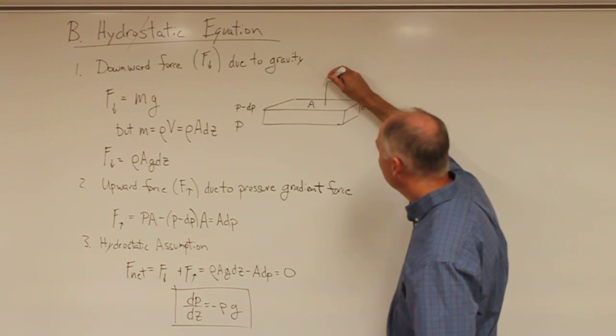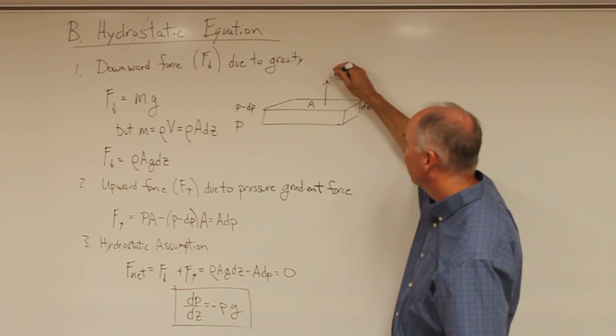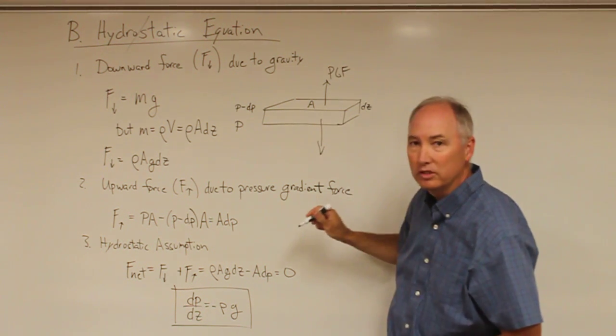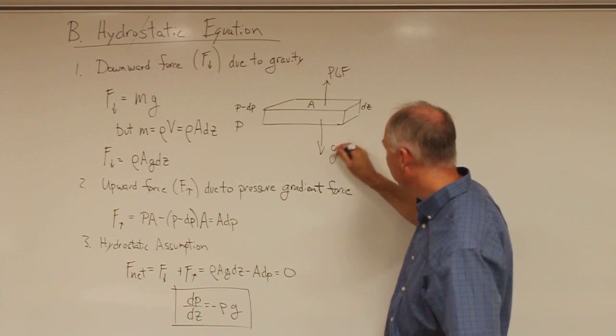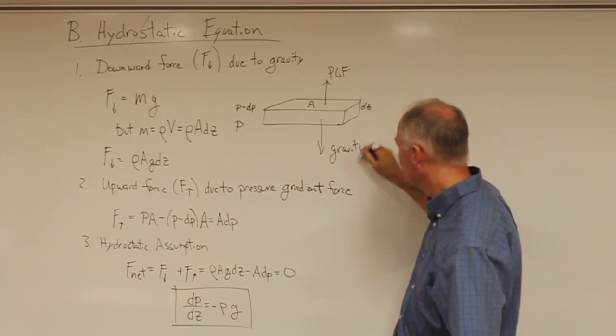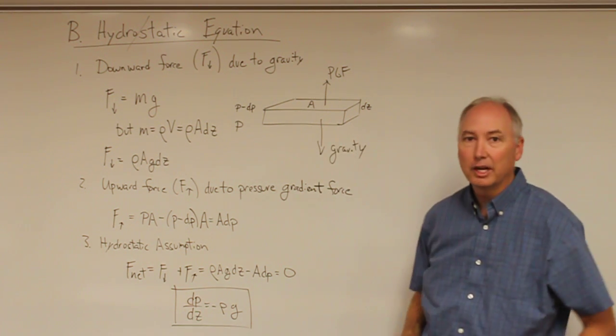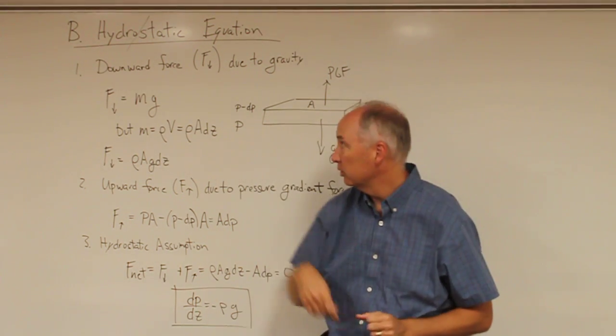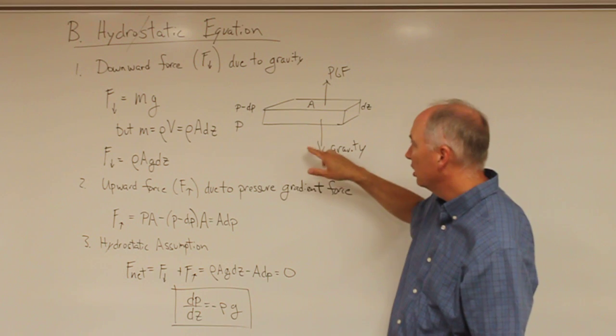there are two forces that are acting on this slab. We have the upward force of the pressure gradient force and the downward force of the gravity. And those two forces are going to be balanced, which is going to keep our air parcel static in the vertical direction.